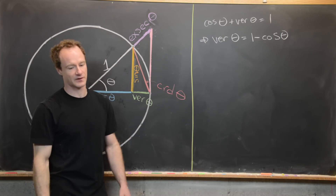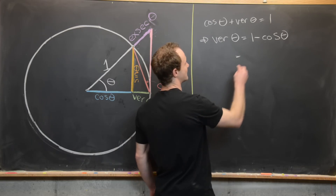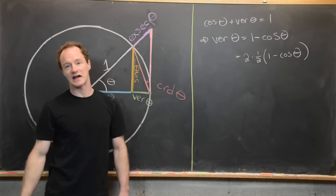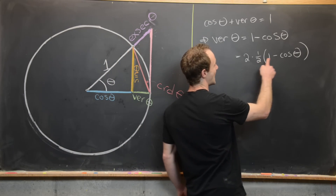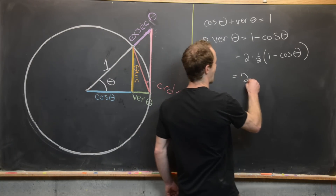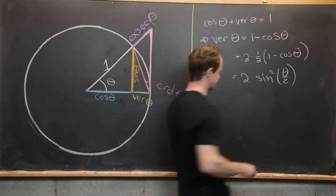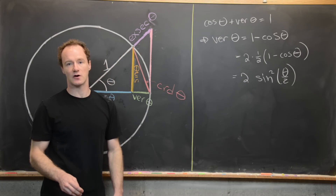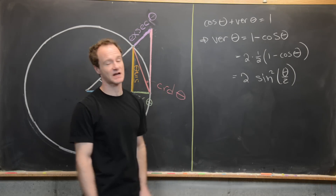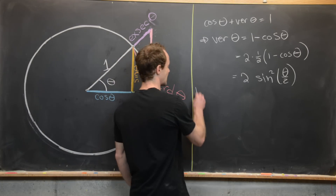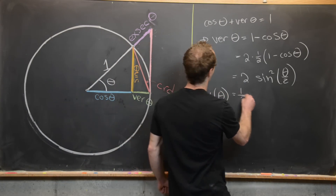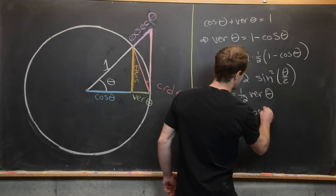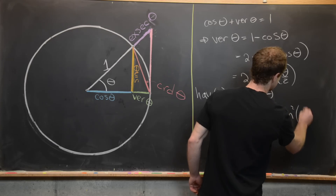Sometimes we see a different formula for the versed sine. We can write it as 2 times (1/2)(1 − cosine theta), and then recognize the power-reducing formula: (1/2)(1 − cosine theta) = sine squared (theta/2). So another formula is versed sine theta = 2 sine squared (theta/2). It's also common to use the half versed sine function, denoted HAV theta, which equals (1/2) versed sine theta. That gives us HAV theta = (1 − cosine theta)/2, and also HAV theta = sine squared (theta/2).